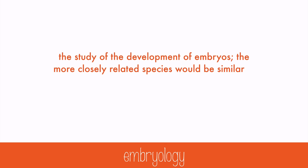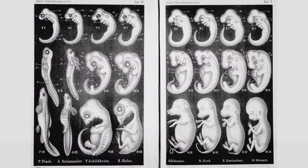Embryology is the study of the development of embryos. More closely related species would be similar in their earliest stages of development. These exaggerated drawings by Ernst Haeckel were used to show similarities between early stages of an embryo among different species, including salamanders, pigs, and humans. While they're not truly accurate, they were some of the first attempts at using embryology as evidence for evolution. Today, the stages are studied at the same point in their development, unlike these images.